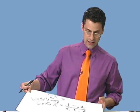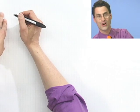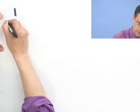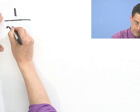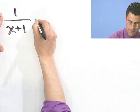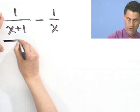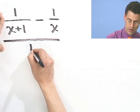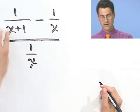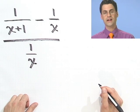Anyway, let's try one last one. I'll give you the opportunity to try this one — notice how I saved the real hard ones for you. The expression is: 1 over x plus 1, minus 1 over x, all divided by 1 over x. Give that a try and see how you make out.